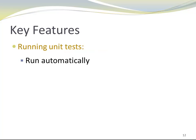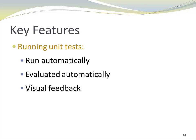Here are some key features regarding running unit tests. Unit tests are run automatically — that is the main feature. They are evaluated automatically, which helps avoid scroll blindness. JUnit and many other unit test frameworks give your program visual feedback: typically a green bar if all the tests pass, and a red bar if at least one test fails. You also have a choice whether to run tests for the entire code base or a limited amount of tests.